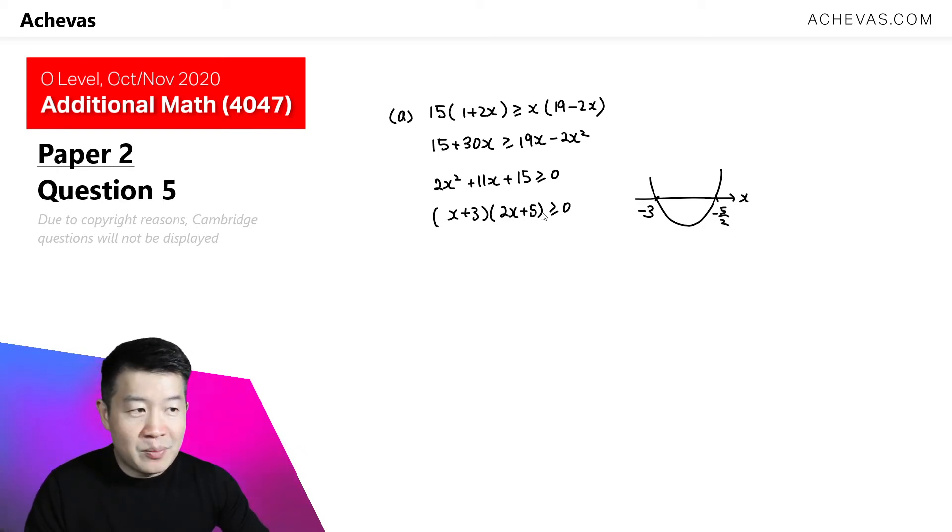We are looking for the y coordinates that are bigger or equal to 0, and that means that x must be either less than minus 3 or x must be bigger than minus 5 over 2. So this will give us the answers for this inequality. x is going to be less than or equal to minus 3, or x is going to be bigger or equal to minus 5 over 2.